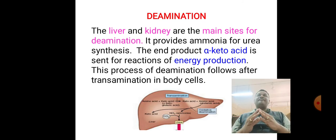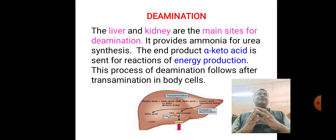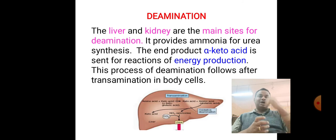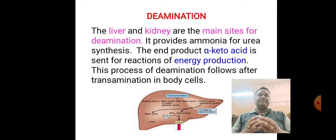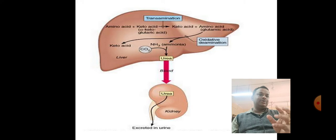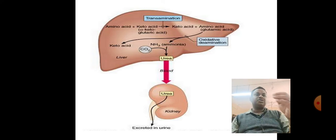Deamination is a process of removal of the amino group from an amino acid, making that amino acid an alpha-keto acid. This alpha-keto acid end product will then enter into energy production, for example the TCA cycle. The liver helps in both transamination and deamination, and the ultimate product is urea, which is then transferred to the kidneys for excretion through the blood system.